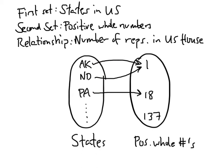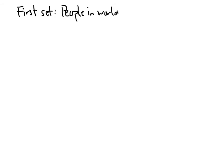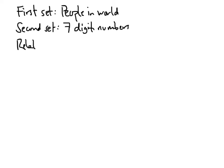Let's see an example of something that isn't a function. For something to even have a chance of being a function, we need two sets. In this example, our first set is going to be the set of people in the world, and our second set is going to be the set of seven-digit numbers. Our relationship is that a person is connected to his or her phone number.